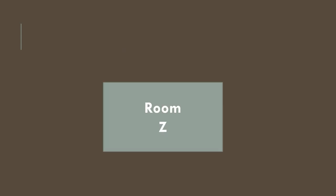We can easily understand with a simple diagram: this is a room and Z has been confined by A in this room. There is no other way out to get out from the room, so Z has been wrongfully confined by A because there is no other way out. Whereas in wrongful restraint, if there is another way out, then it is wrongful restraint. But here there is no way out, so that is why it is called wrongful confinement.